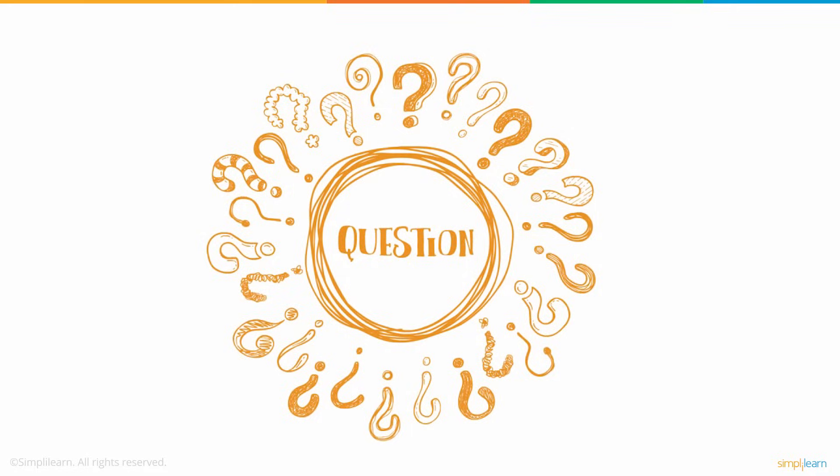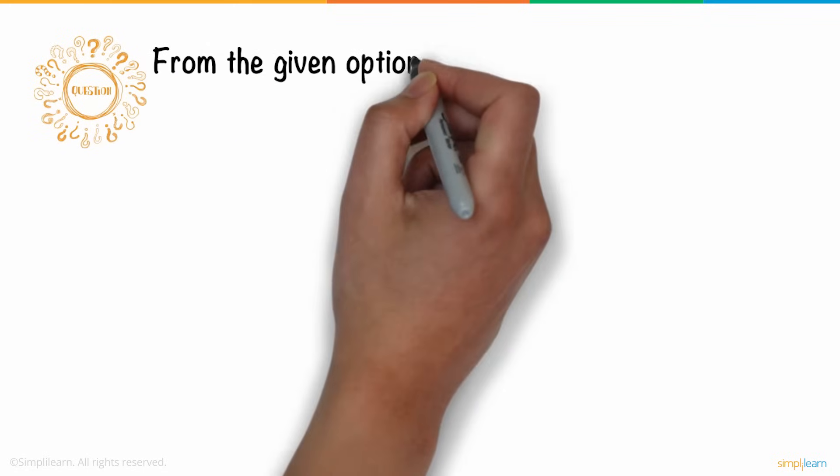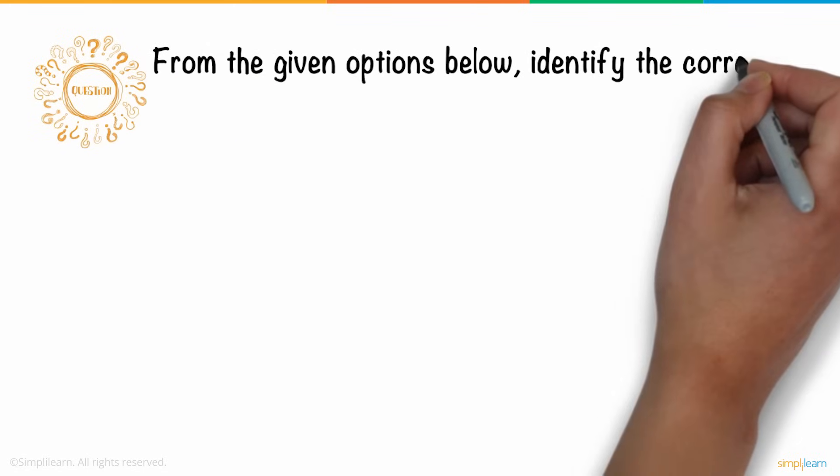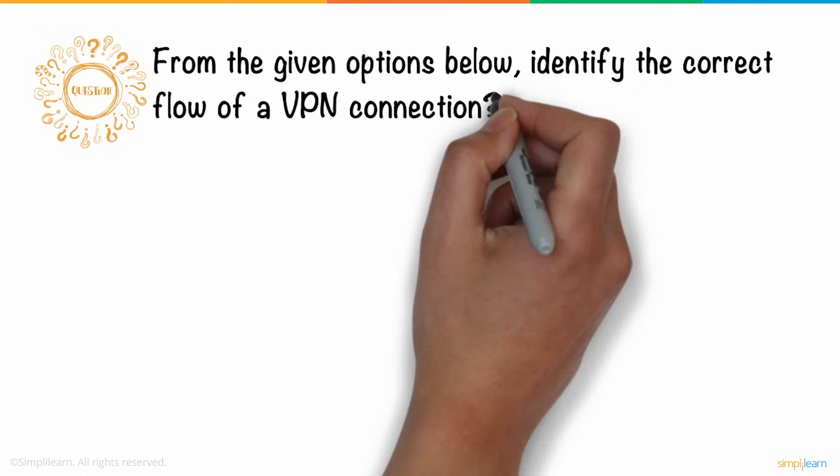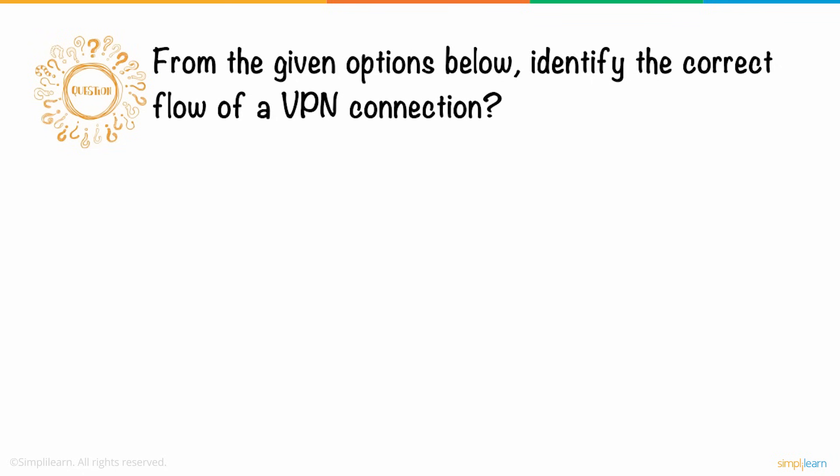So here's a question for you. From the given options below, identify the correct flow of a VPN connection.